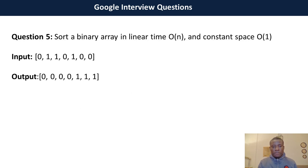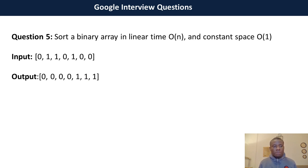I'm going to explain everything. So the question goes like this: sort a binary array in linear time — that is O(n) time — and constant space. The sample input is 0, 1, 1, 0, 1, 0, 0, and the output is going to be 0, 0, 0, 1, 1, 1. So how do we solve this array in linear time?